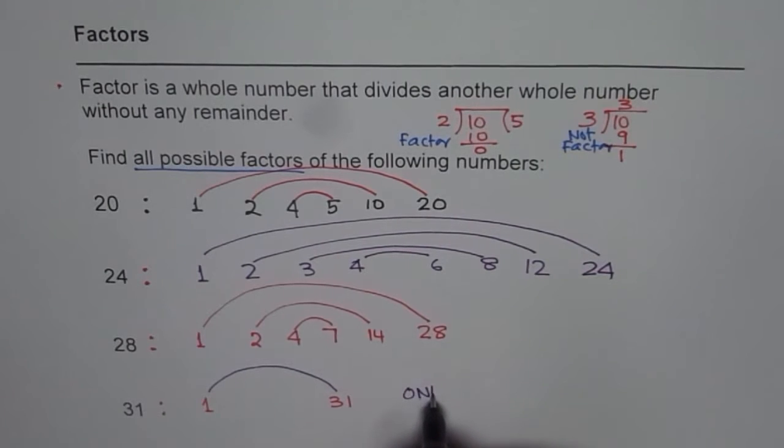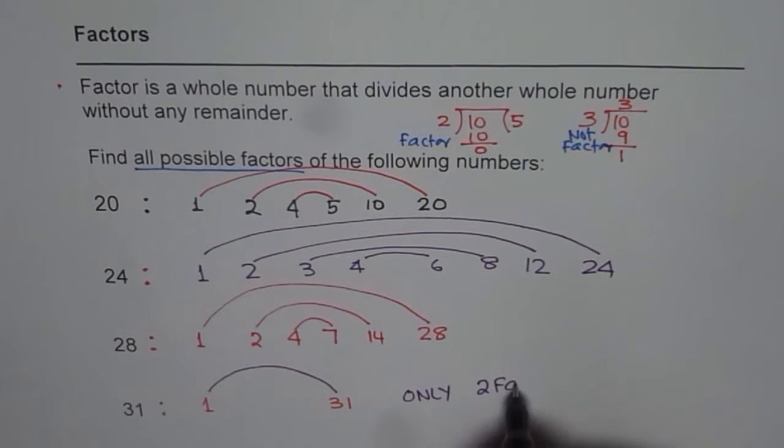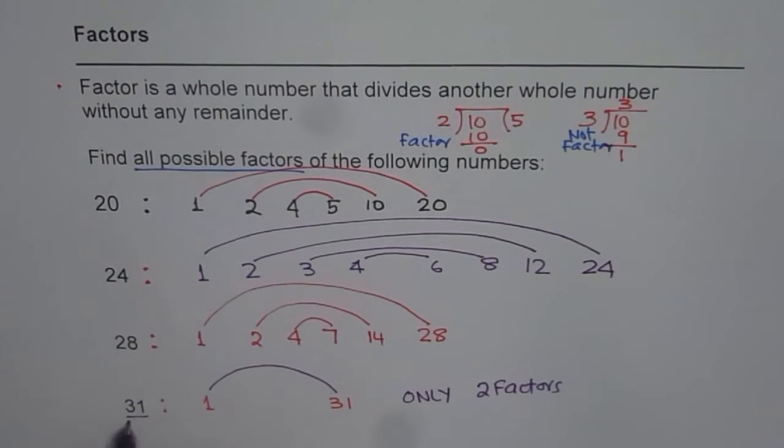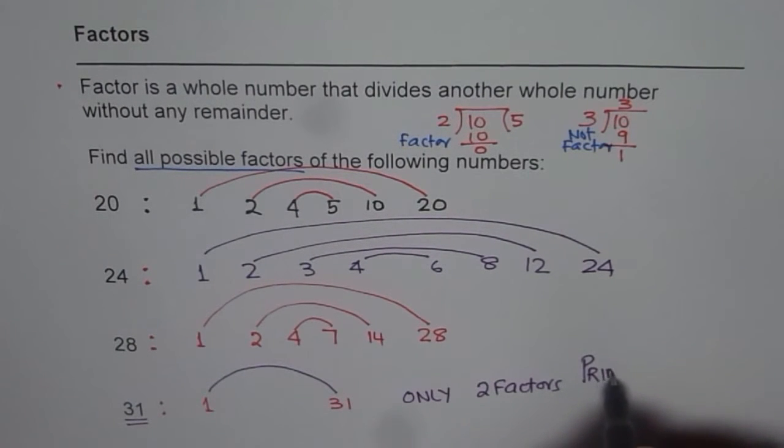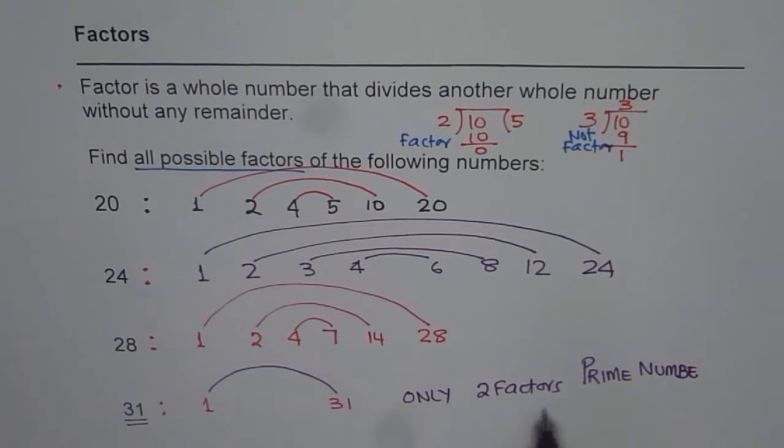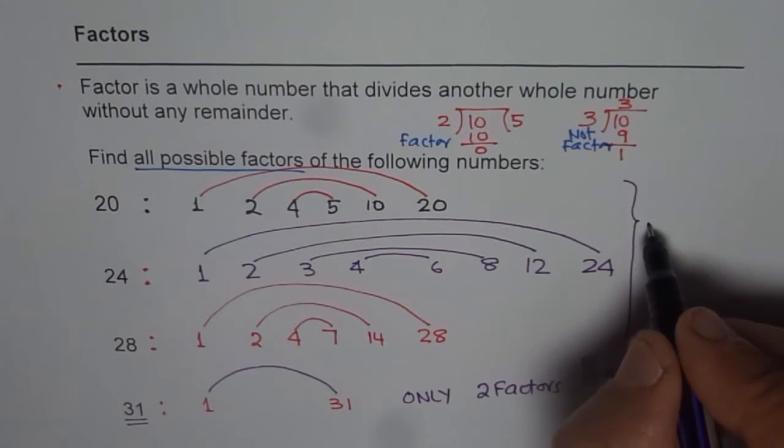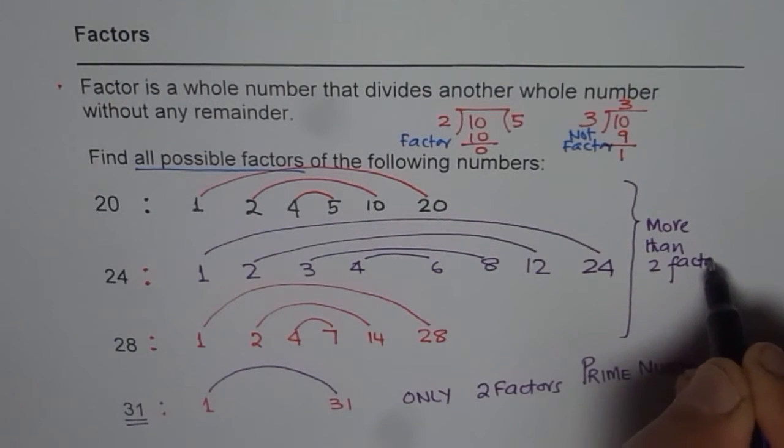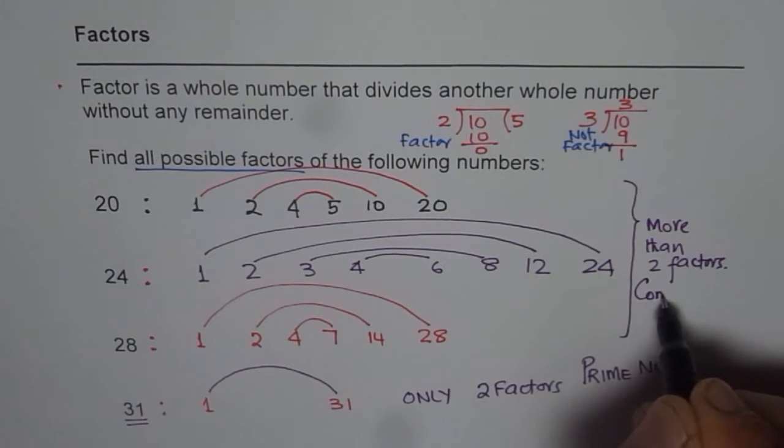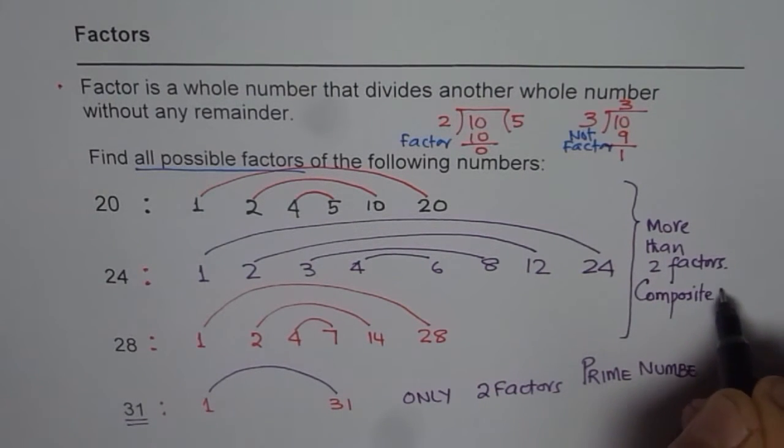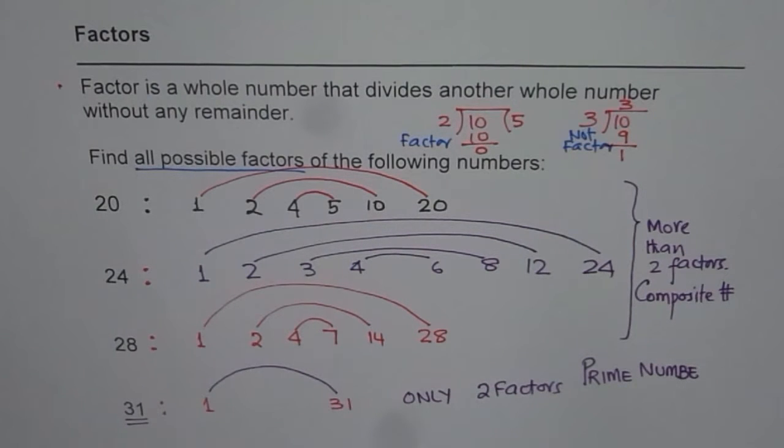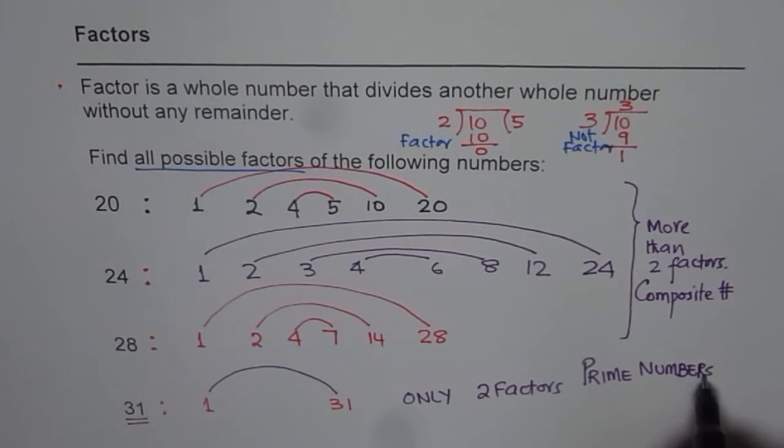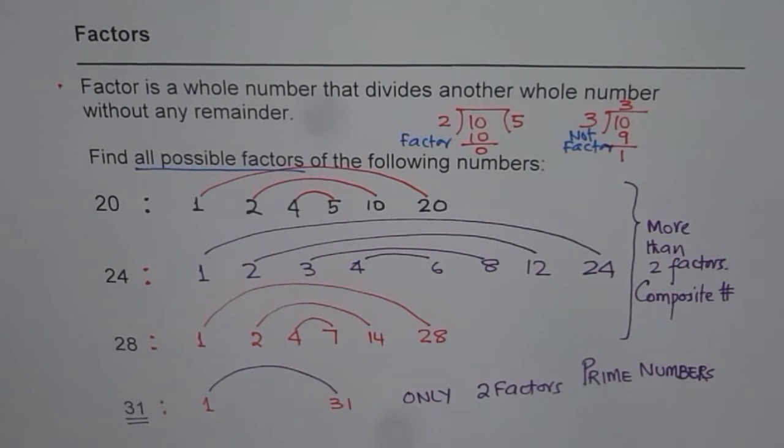Now we have some special terms. If we have only 2 factors, then we call that number as a prime number. If we have more than 2 factors, in these cases, then we call these as composite numbers. So composite numbers are those numbers which have more than 2 factors. Prime numbers are those numbers which have only 2 factors.